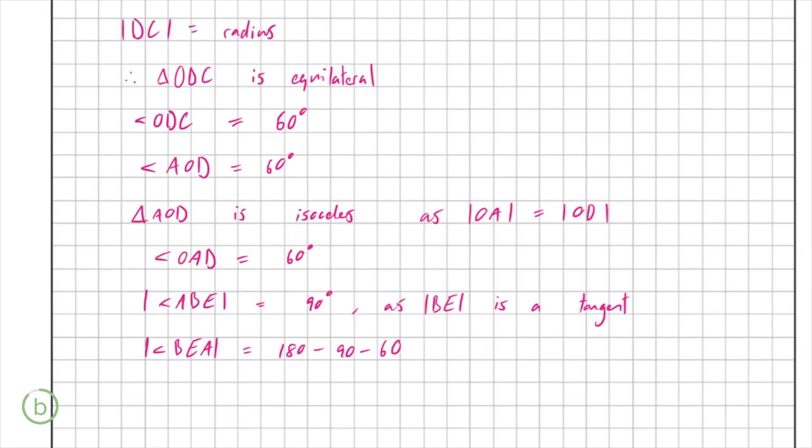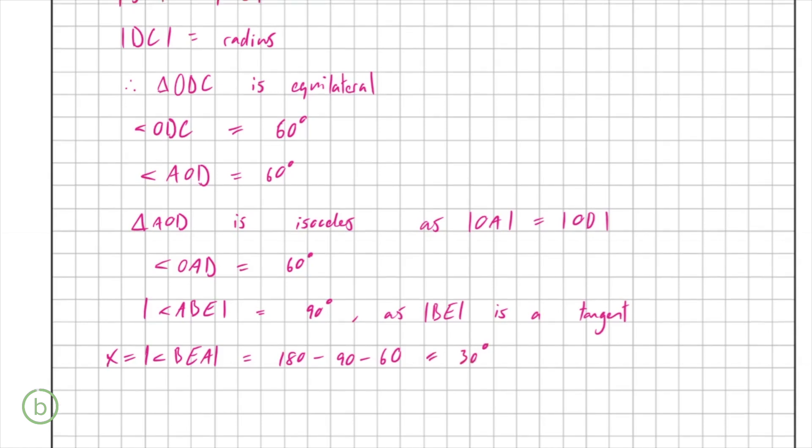So our leftover angle BEA, which we had previously called X, is just 180 degrees minus 90 degrees at the tangent and minus 60 degrees, which means that it is 30 degrees. So that is the angle BEA, and that's it for part B. So finding this angle, you're going to get 10 marks. And that's the end of this question.